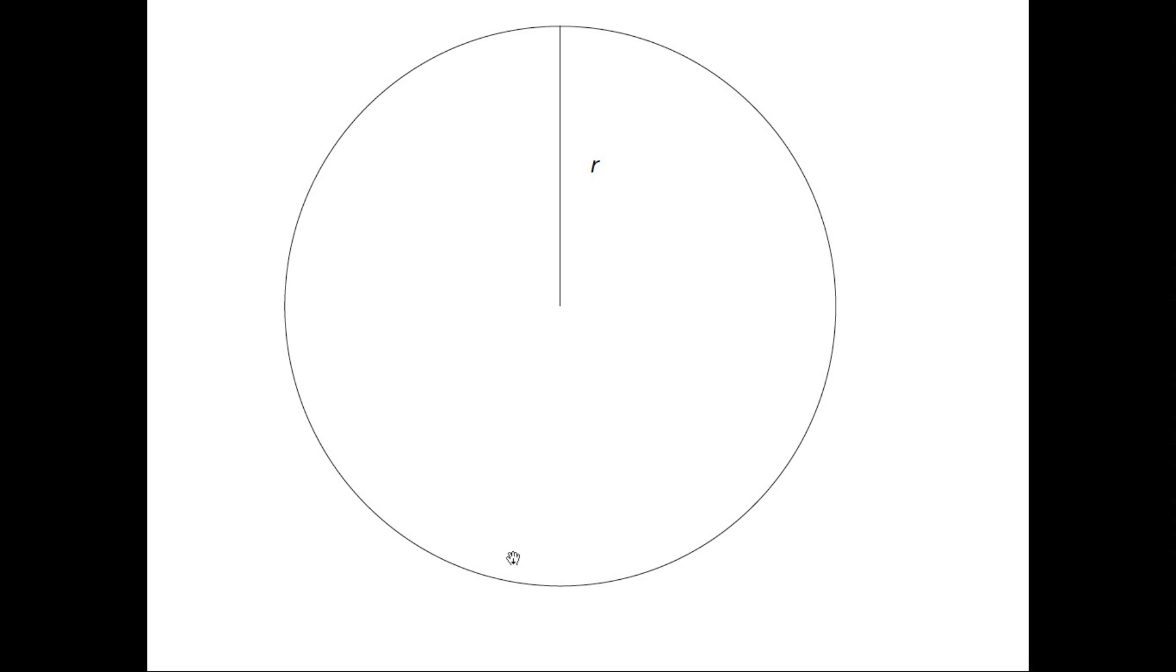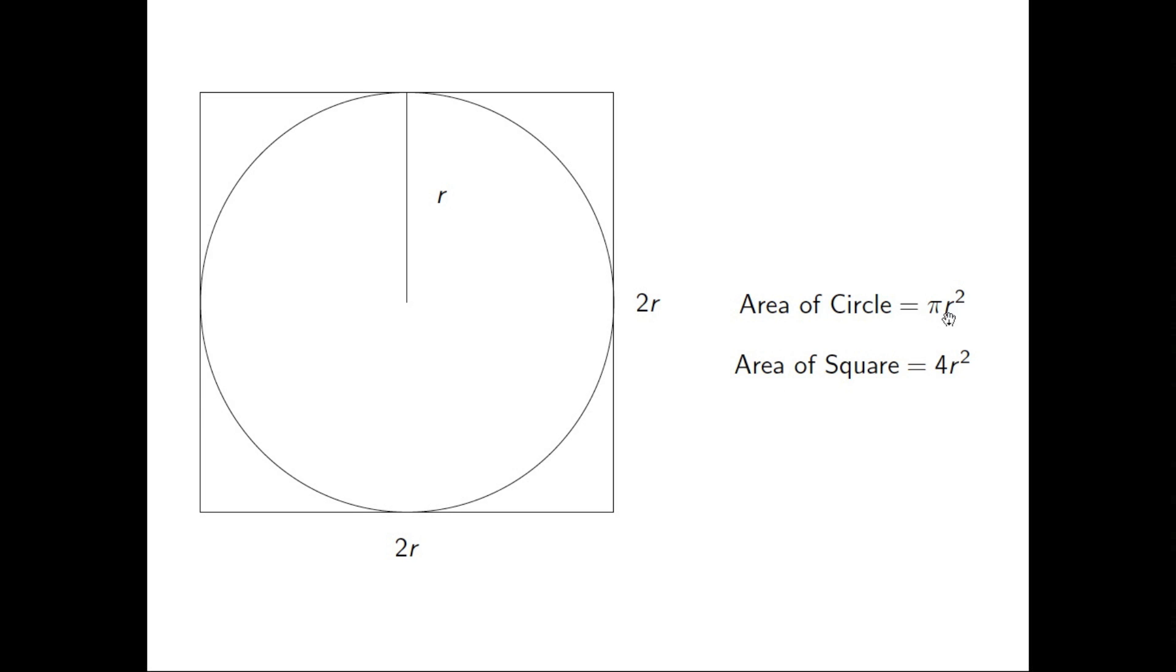So if we take this same circle and put it in a square, and we inscribe it in a square so that the square has side length 2r, then the area of the circle is still pi r squared, and the area of the square is 4r squared, so 2r times 2r.